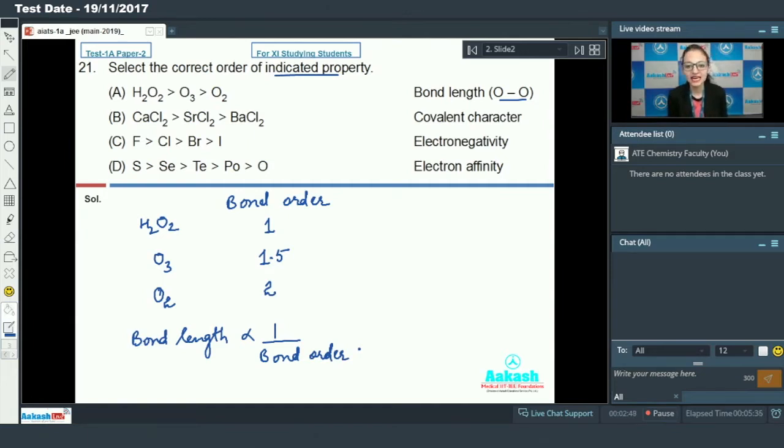These are the bond orders of oxygen-oxygen bond and we know that bond length is inversely proportional to bond order. So, the order will be H2O2 has largest bond length, then ozone molecule, and then oxygen molecule. The given order is correct.